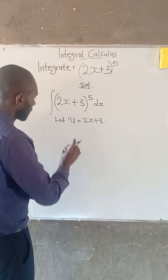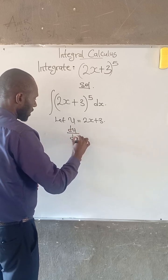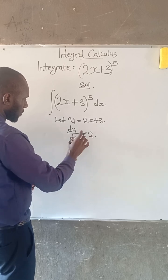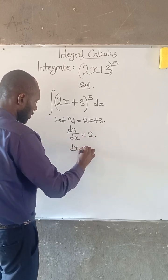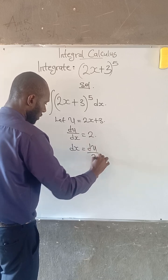So at this point we can have that du/dx is equal to 2. So if we cross multiply here, we can have it that dx is equal to du divided by 2.